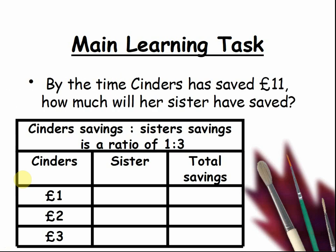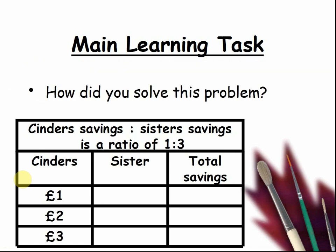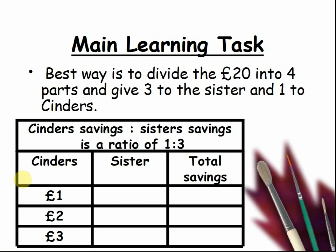By the time Cinders has saved eleven pounds, how much has her sister saved? Pause the video and work it out. If they have saved twenty pounds together, how much of that belongs to Cinders and how much to the sister? Pause the video and work it out. The best way to solve this is to divide twenty pounds into four parts — give three parts to the sister and one to Cinders. Pause the video and work it out.